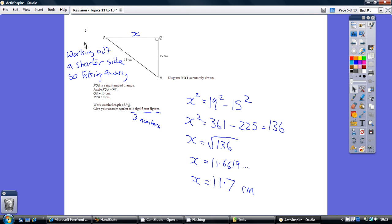Well, this one's different. Look, we've got the longest side, the one that's opposite the right angle. That's 19. We're working out one of the two shorter sides. So this time it's Pythagoras but a taking away question.